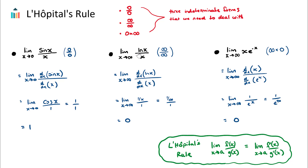Let's try the second one. Using L'Hopital's rule, let's take the derivative of the numerator and the denominator. The derivative of the natural log of x is one over x, and the derivative of x is just one. So now we have the limit as x approaches infinity of (one over x) over one. Substituting in infinity: one over infinity over one. One over infinity is in fact zero, and zero over one is an answer — it's not one of our three indeterminate forms. Zero is our answer for this limit, found using L'Hopital's rule.